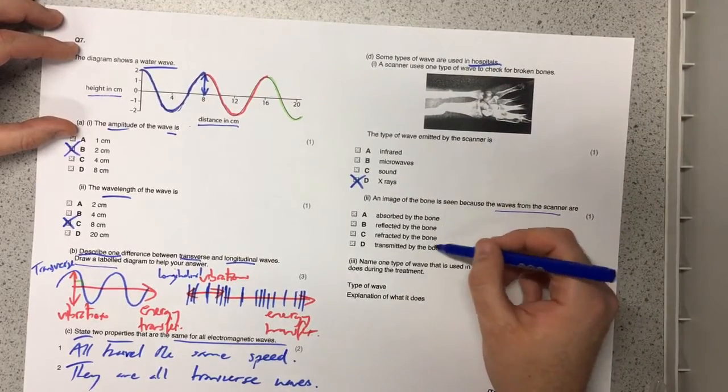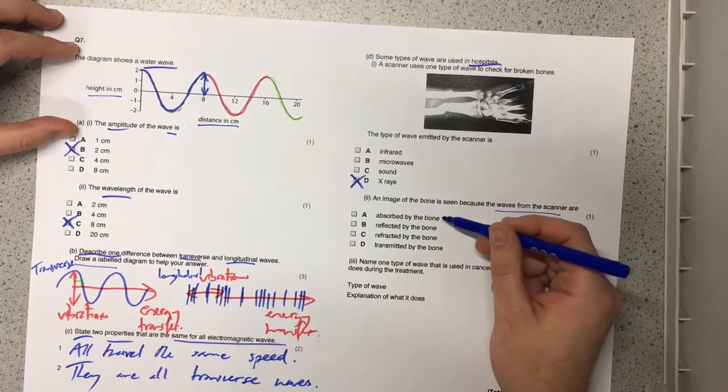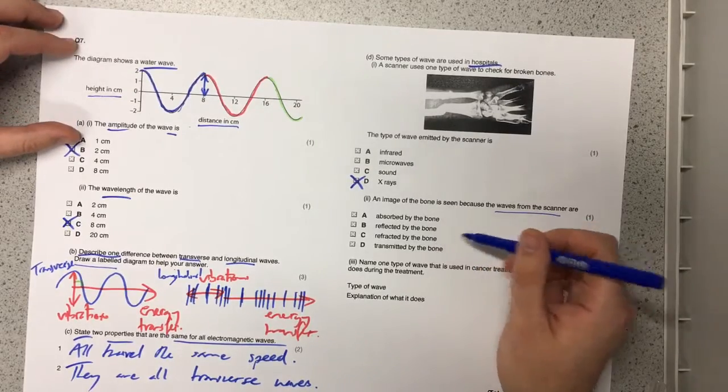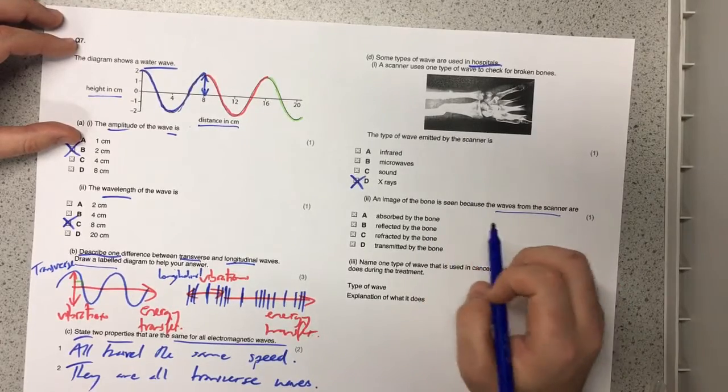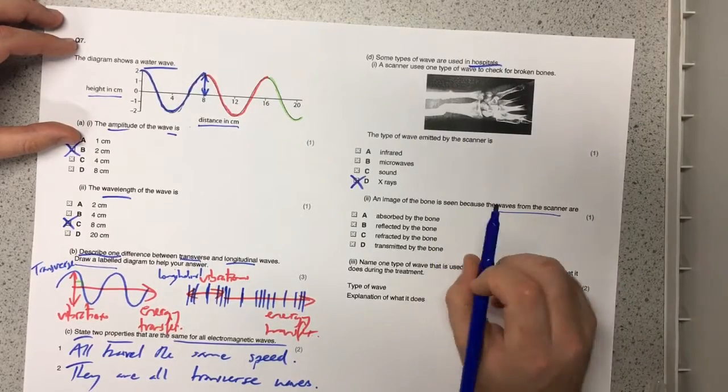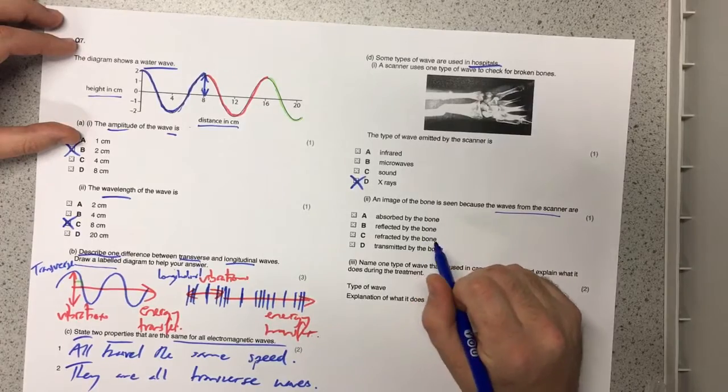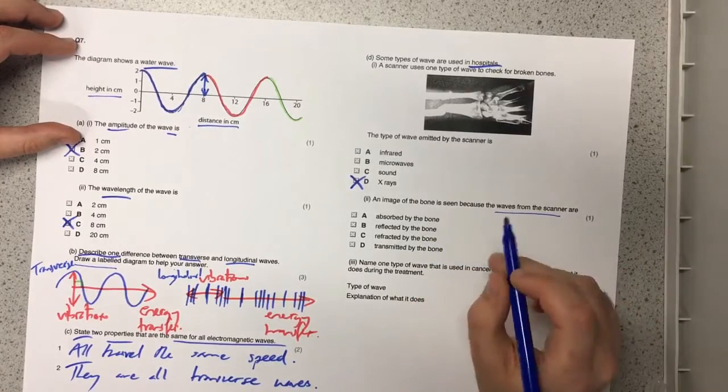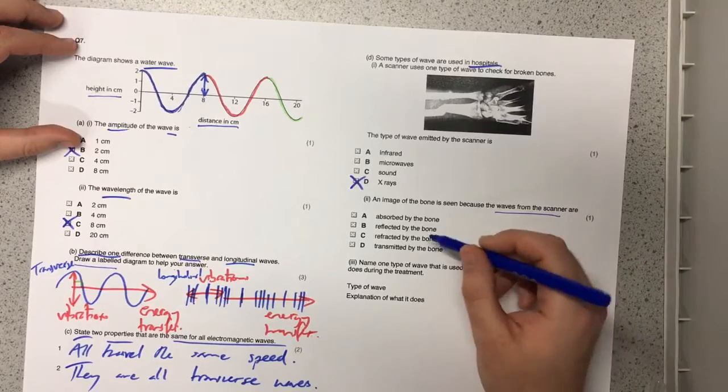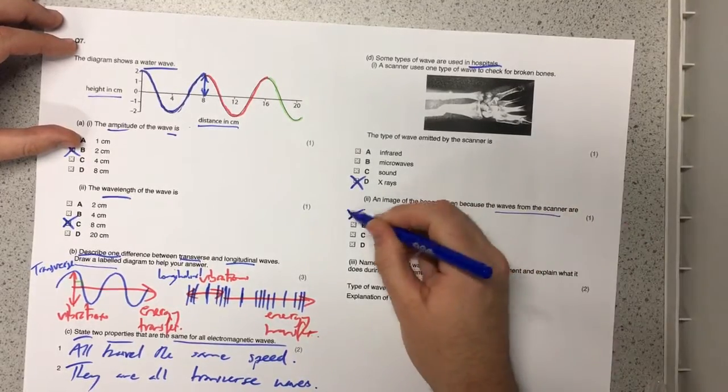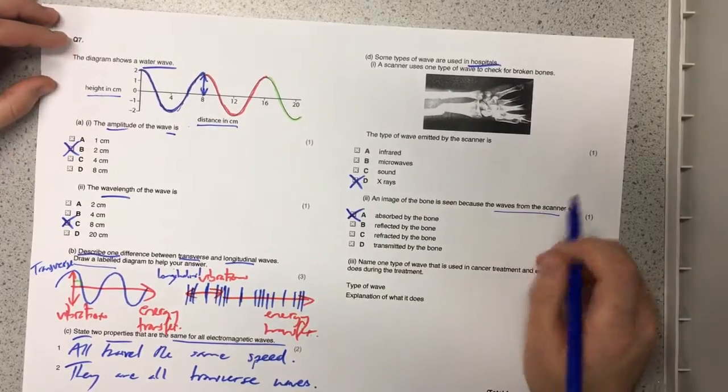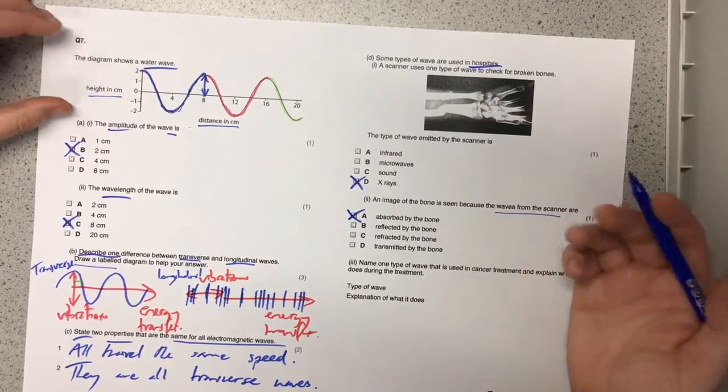Now I think this is the difficulty in deciding is it absorbed, reflected or refracted. Well x-rays are incredibly high energy and so not many things are going to be able to reflect them or refract them. You have to have a very very dense material like a metal. Perhaps only the densest of metals might be able to cause some reflection or refraction. But they are absorbed by bones because bones are dense enough for them to be absorbed.